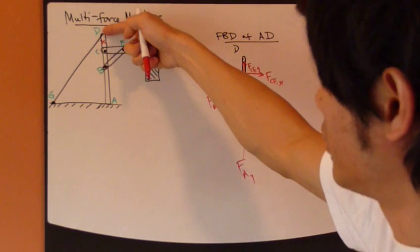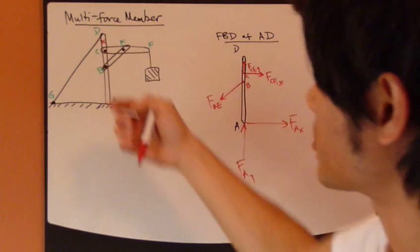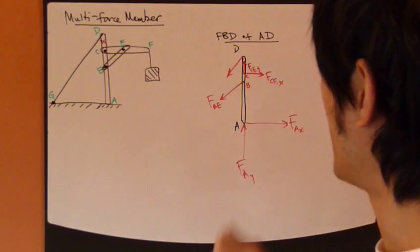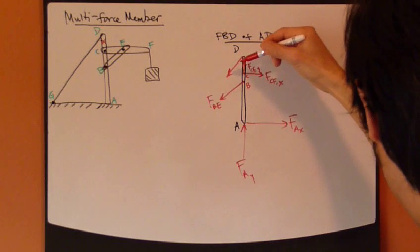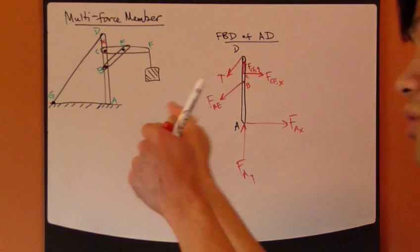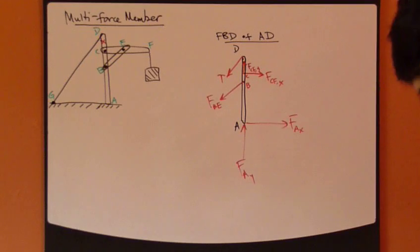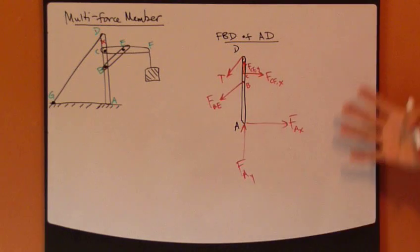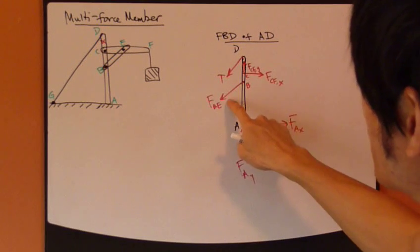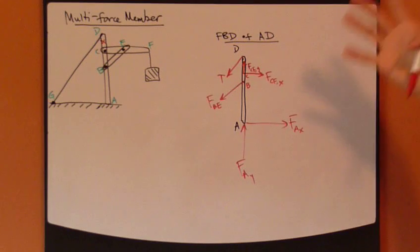At point D at the top, we have a rope pulling from it. The direction is known — it's pulling downward — so we call it T for tension. That completes the free body diagram for member AD. Counting the forces: one, two, three, four, five, six forces. AD is a six-force member.